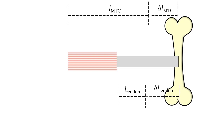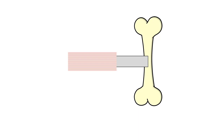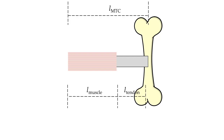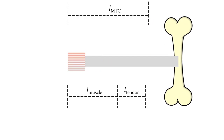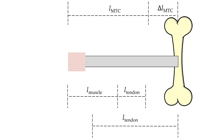When the MTC lengthens due to tendon length change, energy is going into the tendon. This energy can then be released back into the skeletal system, rather than going into the muscle. Furthermore, we can look at a case where there is an overall length change in the MTC coming from a lengthening of the tendon, while the muscle is actually shortening — leading to an even greater lengthening of the tendon. These actions help explain how the MTC acts like a spring. The fact that the tendon length changes can be different from the MTC length changes means that the tendon decouples the MTC length from changes in the muscle length.